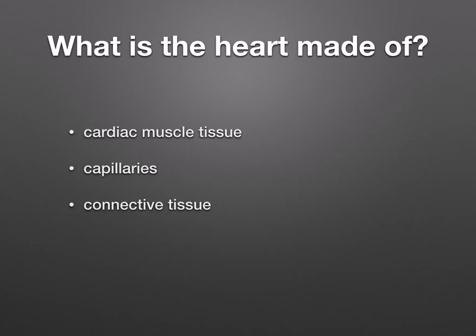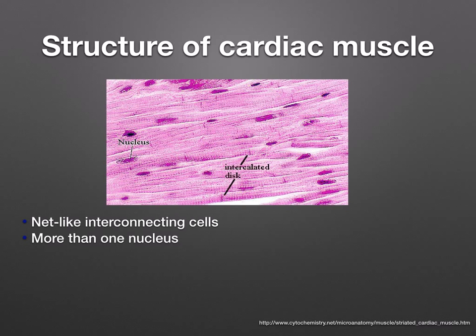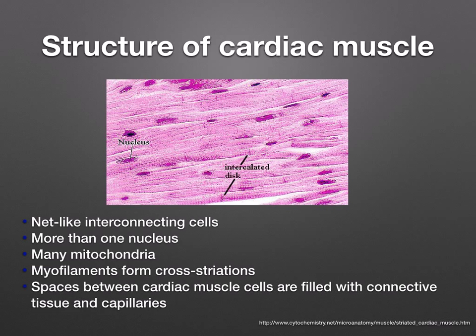The heart is made up of cardiac muscle tissue, capillaries, and connective tissue. The wall of the heart is almost entirely made up of cardiac muscle, which is capable of rhythmic contraction and relaxation over a long period without fatigue. Cardiac muscle comprises net-like interconnecting cells with more than one nucleus, many mitochondria, and myofilaments that form cross-striations. It appears striped under the microscope because it's made up of proteins called actin and myosin, and it has numerous mitochondria because these supply the ATP.